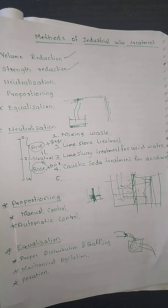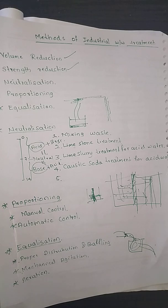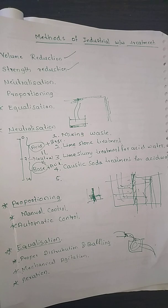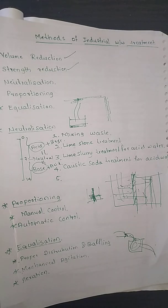In today's class, we have discussed the different methods of industrial wastewater treatment: neutralization, equalization, and proportioning. We also studied how industrial wastewater containing inorganic solids can be treated using dialysis, ion exchange, and reverse osmosis.